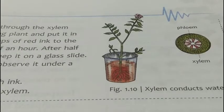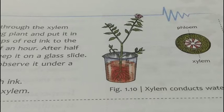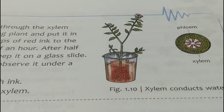Here is a small activity to understand how water is transported through the xylem. Procedure: Take a soft twig of a flowering plant and put it in a beaker containing water. Add a few drops of red ink to the water. Leave the twig in the water for half an hour. After half an hour, cut a thin slice of the stem, keep it on a glass slide, and put a few drops of water on the slide.